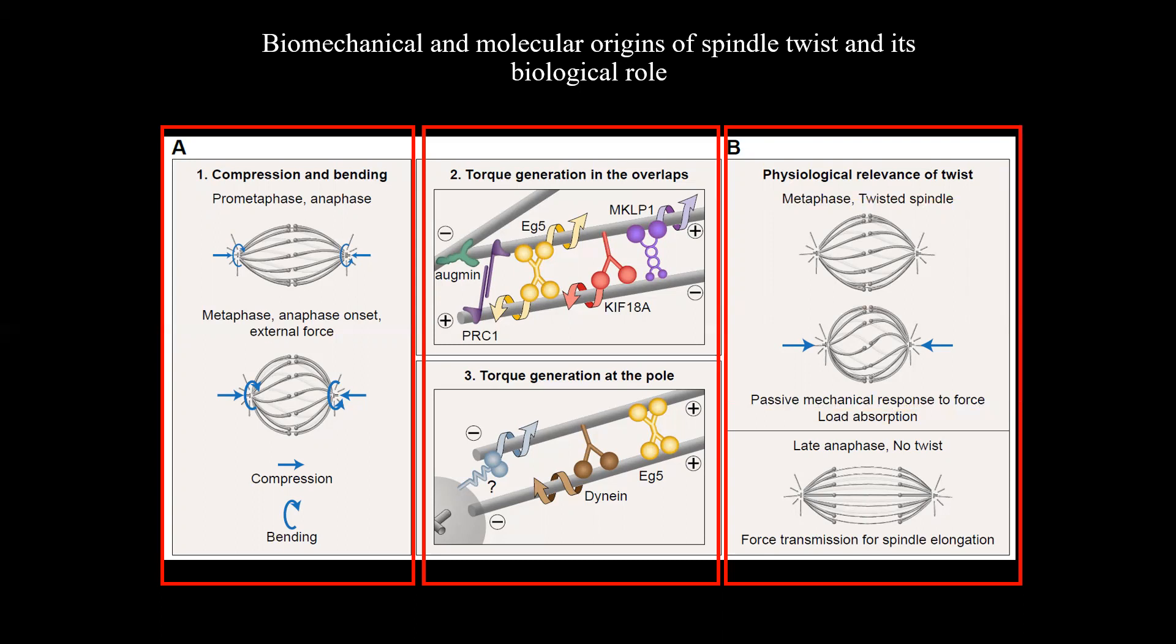Although spindle chirality may be simply a side effect of the action of motors that generate torques, the twisted shapes of microtubule bundles may contribute to spindle function. We propose that the twisted shape observed during metaphase is beneficial for the spindle because it allows for changes of spindle shape as a mechanical response to external forces. A twisted spindle can quickly shorten under compressive forces by increasing the twist in a manner similar to an elastic spring.